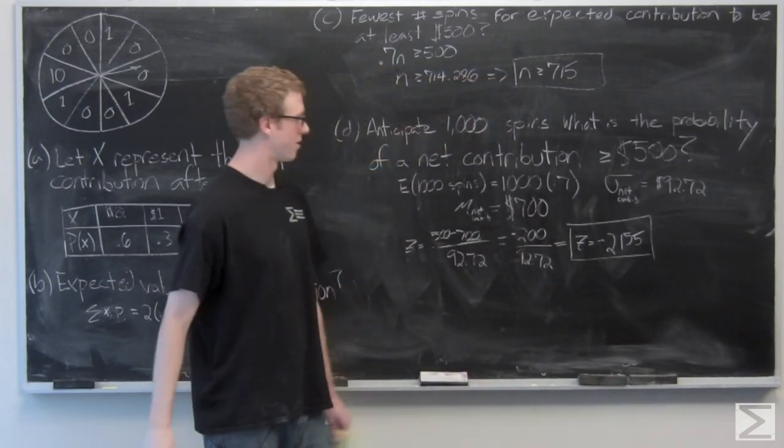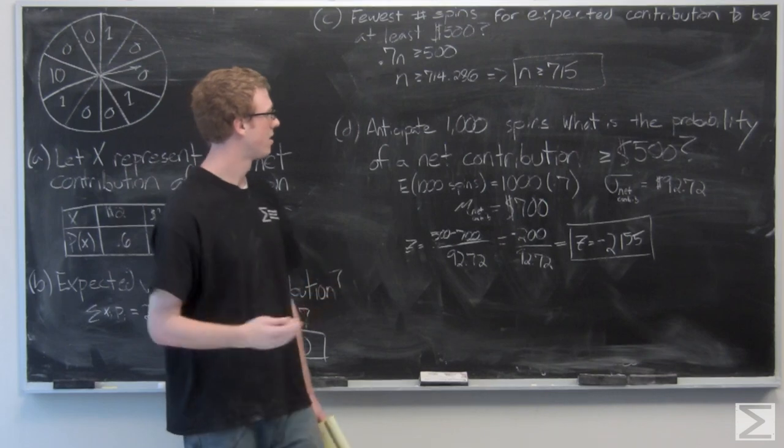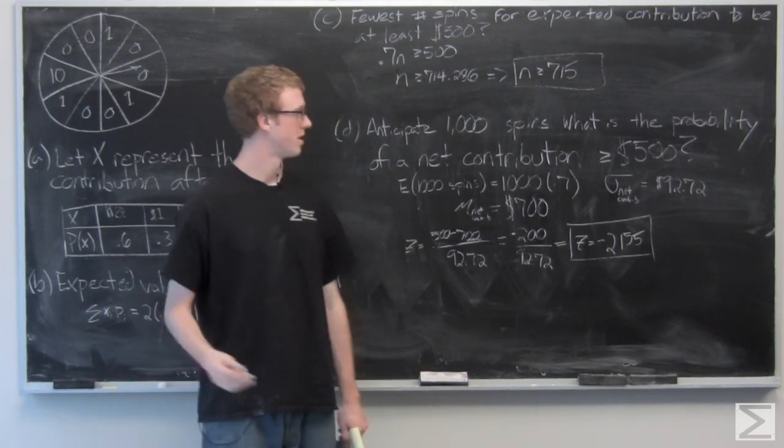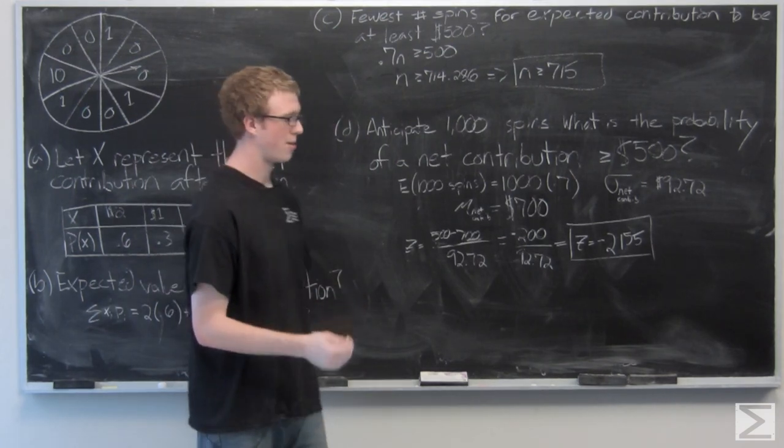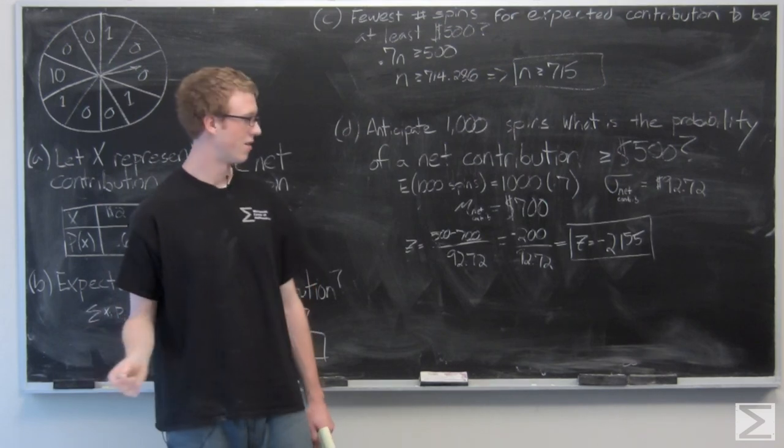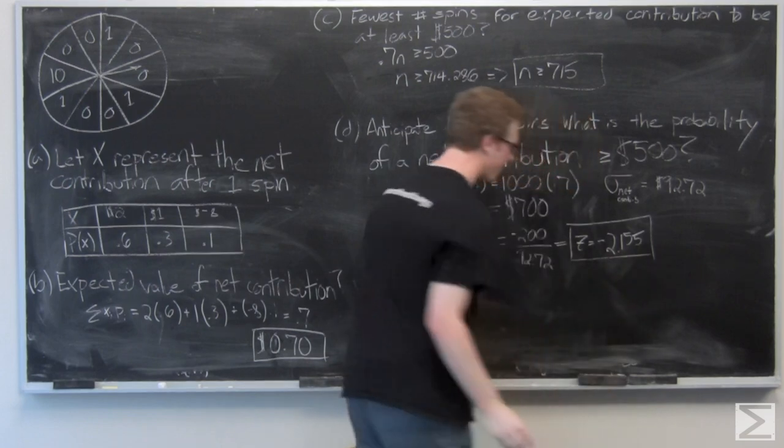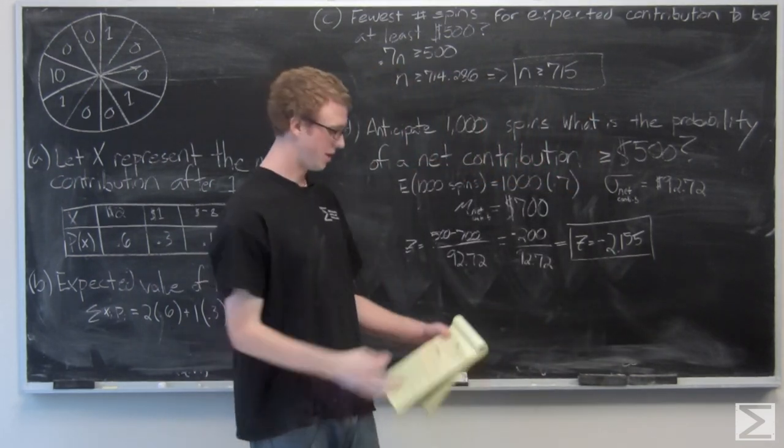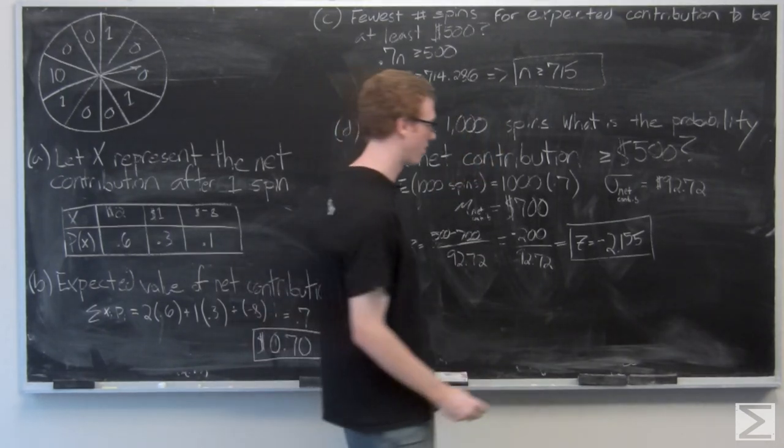And we're just looking for the probability that 1000 spins is going to generate greater than or equal to $500, which is just going to be the probability that z is greater than or equal to negative 2.155. All you're going to have to do is look up this value in your table, and we're going to get a z-score of 0.9844.